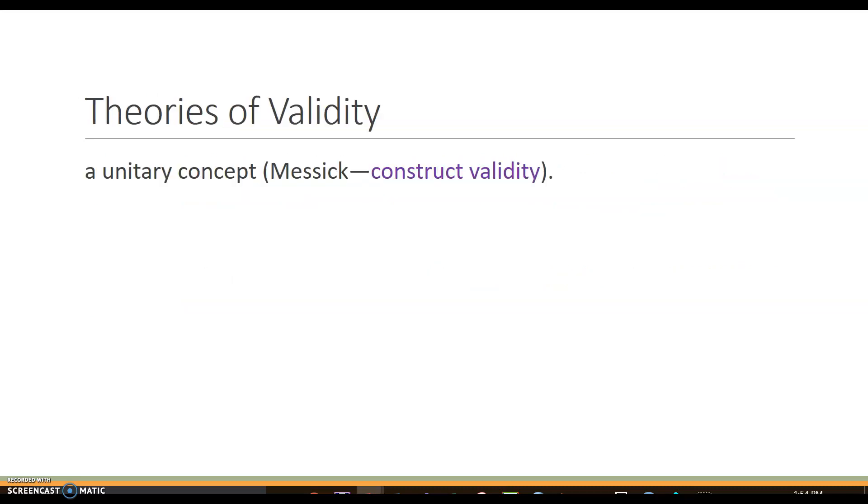There are lots of different theories of validity. Messick argued that it was a single concept, which is what he called construct validity. So this unitarian single construct of validity.